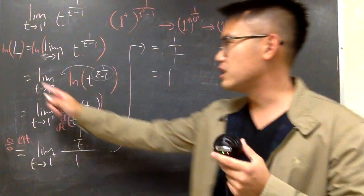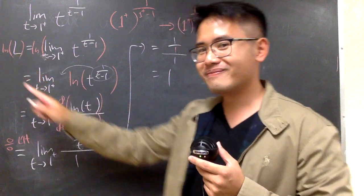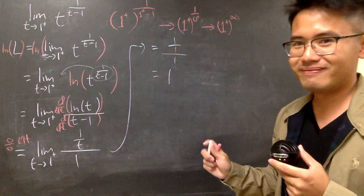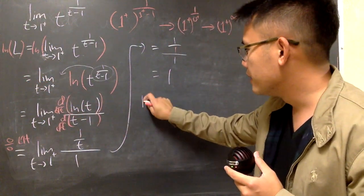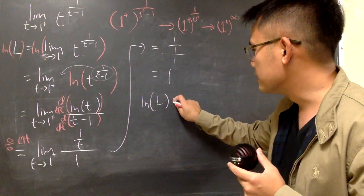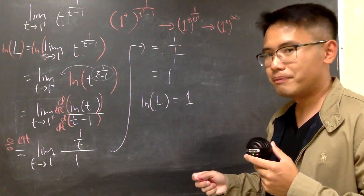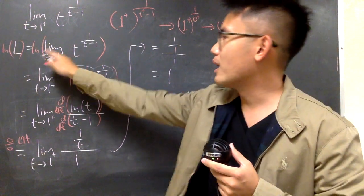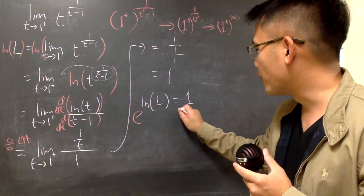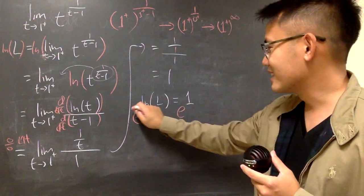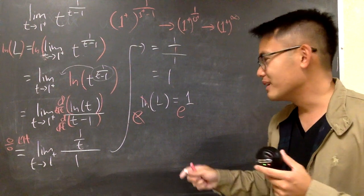Because here we have ln L is equal to 1. This one tells us that the natural log of the limit is equal to 1, and to find out what that limit was, I will have to do e to this power and e to that power so that they cancel. So in the end, we see that L,